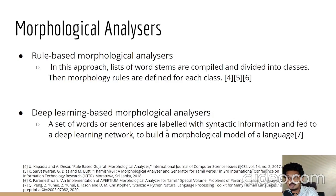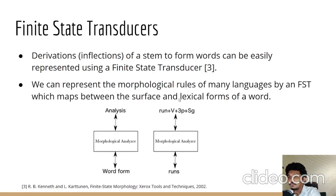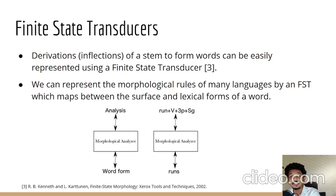There are two major approaches for building morphological analyzers. In the rule-based approach, word stems are compiled and divided into classes, and morphology rules are defined for each class. In deep learning-based approaches, words or sentences are labeled with syntactic information and fed into a deep learning network. We use finite state transducers (FSTs) for building rule-based morphological analyzers, because derivations from a stem can easily be represented using an FST. FSTs map between the surface and lexical forms and can work both as analyzer and synthesizer.